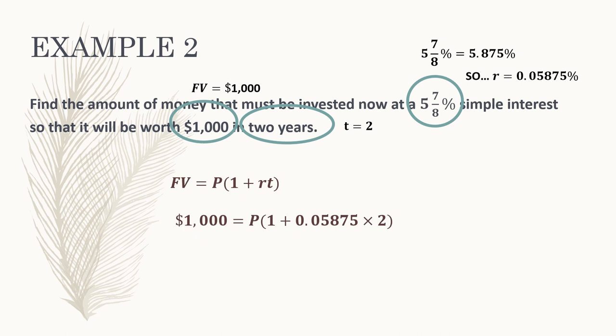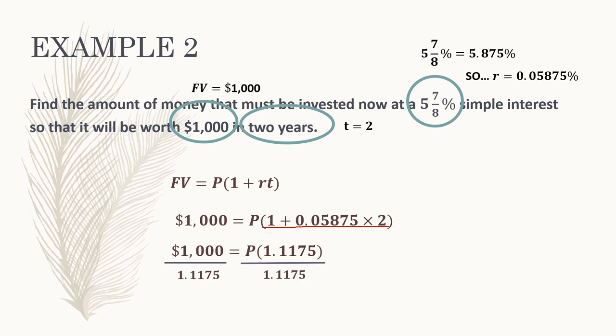Using FV equals P times (1 plus R times T): first, compute what's inside the parentheses — 1 plus 0.05875 times 2 equals 1.1175. So we have 1000 equals P times 1.1175. To isolate P, divide both sides by 1.1175, which gives P equals $894.85. That's how much we need to invest right now so that the investment will be worth $1,000 in two years at a simple interest rate of five and seven-eighths percent.